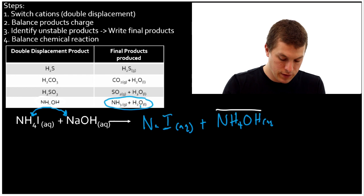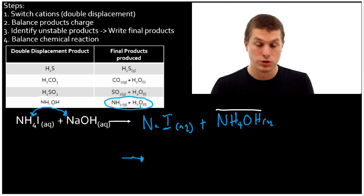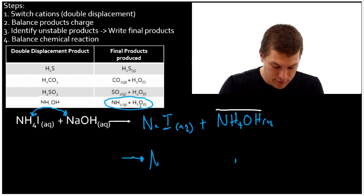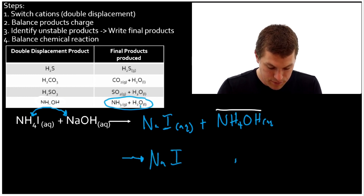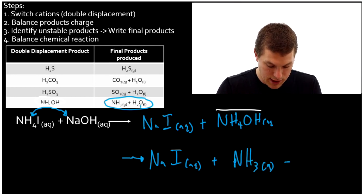I'm gonna skip the reactants just for the sake of time, and we'll just write down the products we get. We'd still get sodium iodide, and that is aqueous and the charges are balanced. And NH4OH is gonna break down into NH3, which is a gas, plus H2O, which is a liquid.